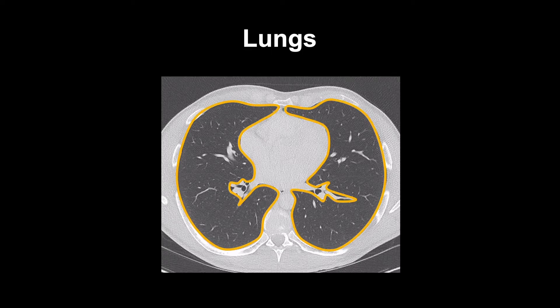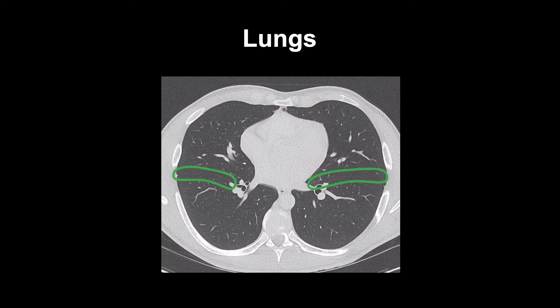In normal lungs, you see background lung tissue, the larger airways and vessels, and the fissures. The background lung is 20% tissue and 80% air, and has a certain uniform grayness that you'll learn to recognize. It is lighter than the black color of the airways, but darker than the light color of the subcutaneous fat.